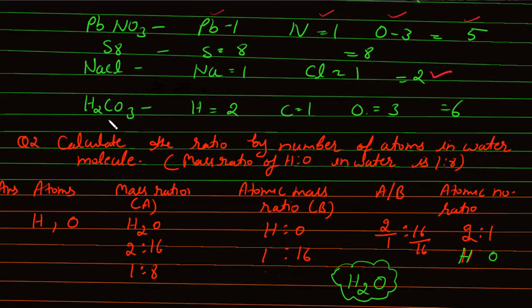H2CO3, carbonic acid: hydrogen=2, carbon=1, oxygen=3 → total atomicity = 6.